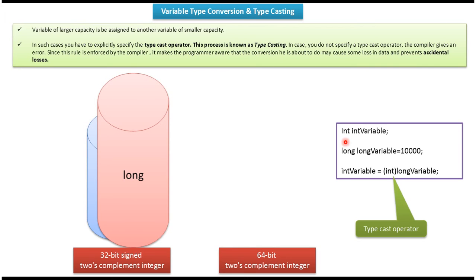Here you can see the example: int variable, long variable, and I am assigning 10000 to the long variable. Then what I am doing is assigning the long variable to the int variable. Here int variable is smaller capacity and long variable is bigger capacity. To assign a bigger capacity variable to a smaller capacity variable, I have to do a typecast. This is the typecast operator. If we do not specify the typecast operator, the compiler will throw a compile-time error, making the programmer aware that the conversion may cause some loss in data and prevents accidental losses.